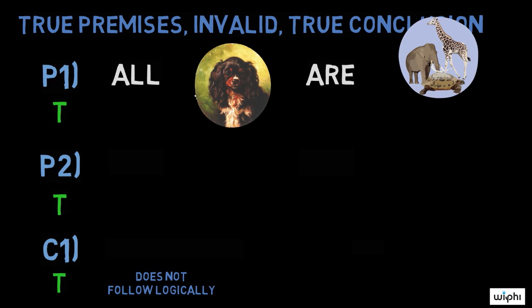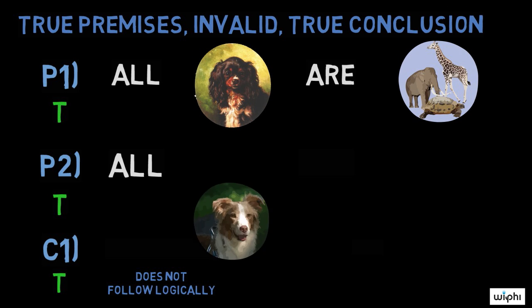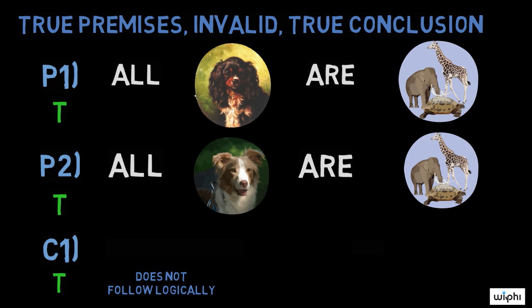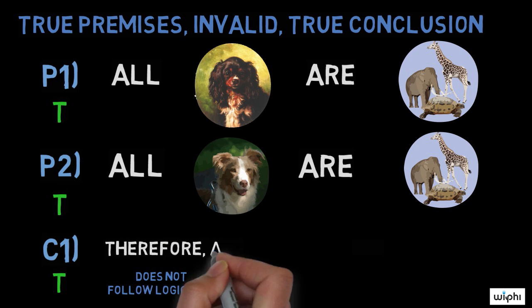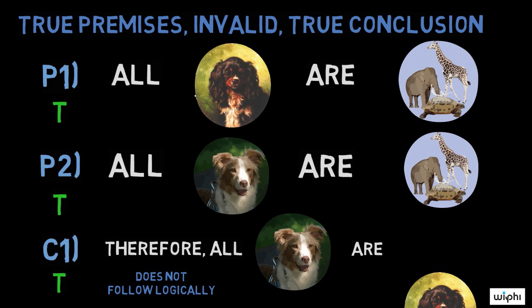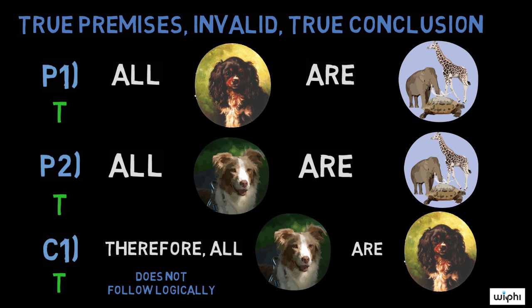Here is an example of such a case. Premise one, all dogs are animals. Premise two, all Australian shepherds are animals. Conclusion, therefore all Australian shepherds are dogs.